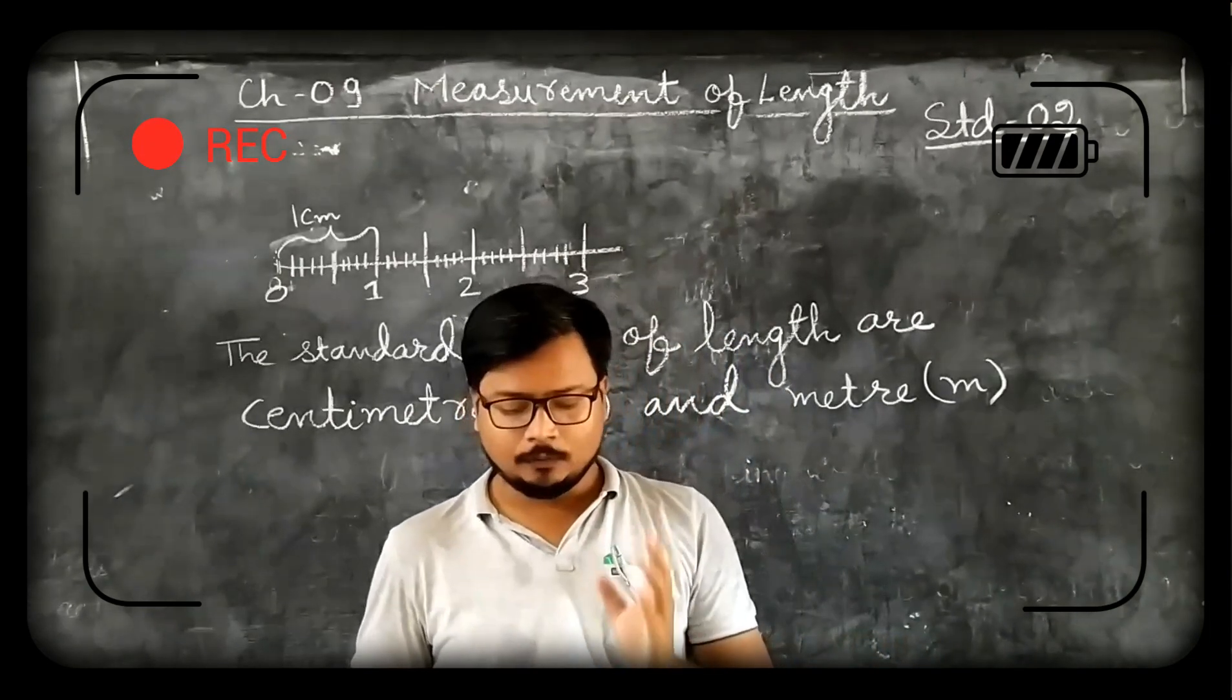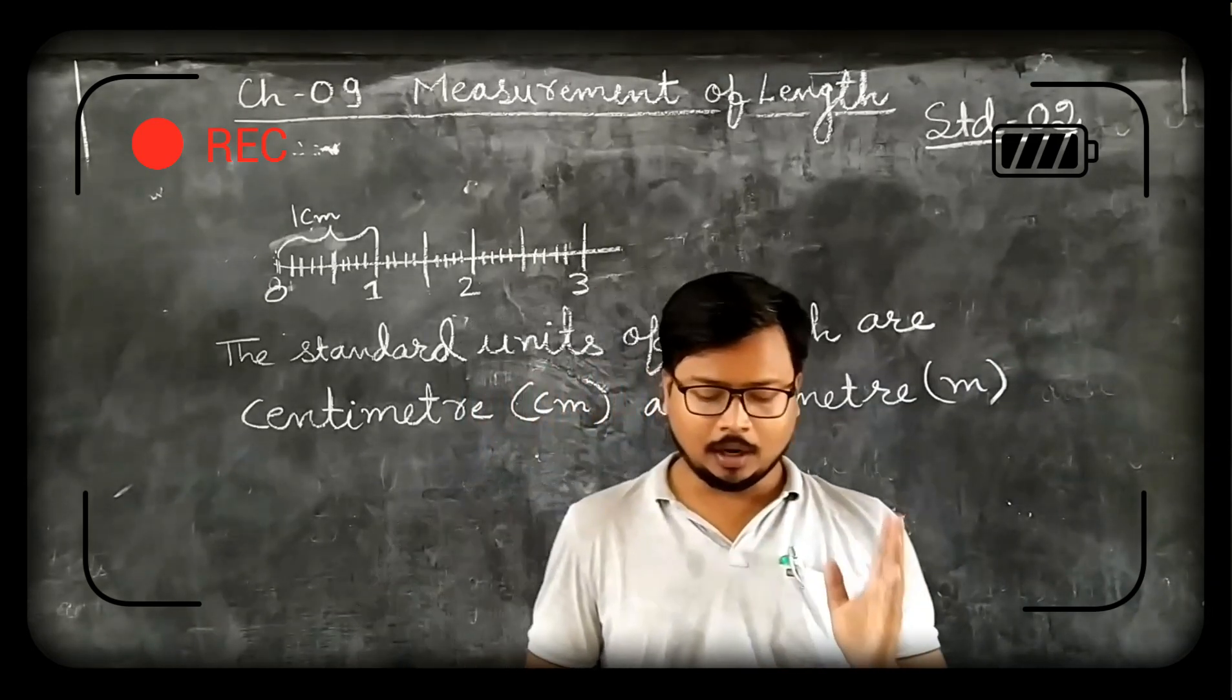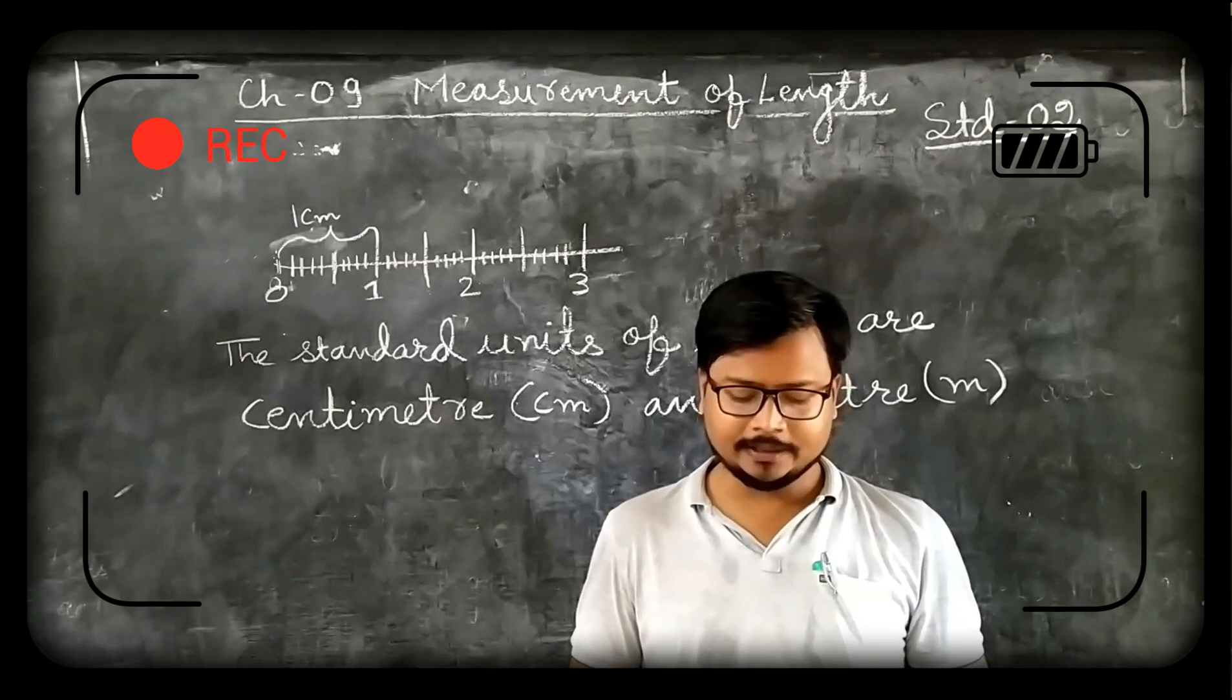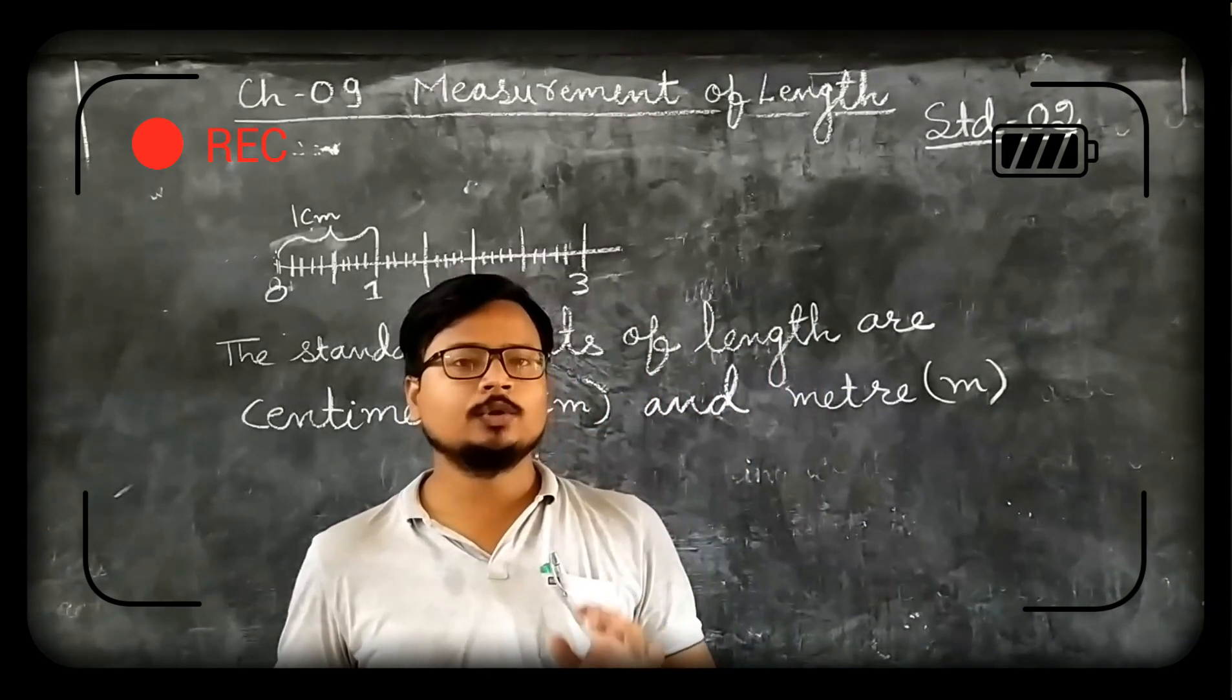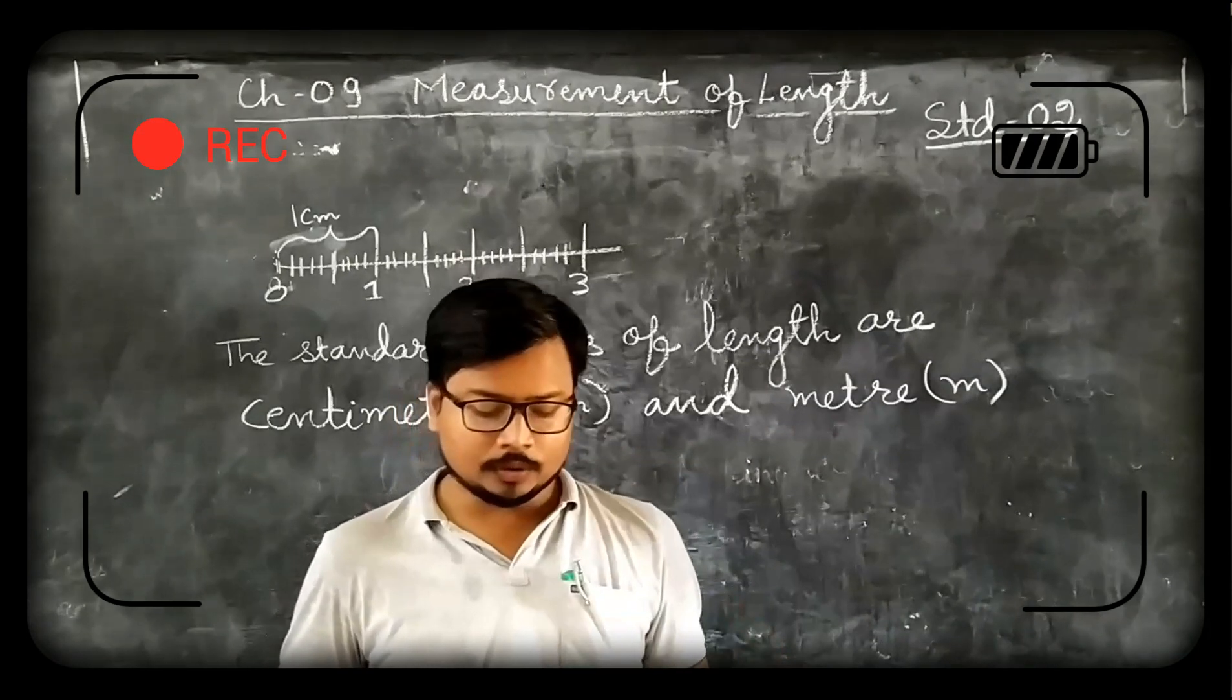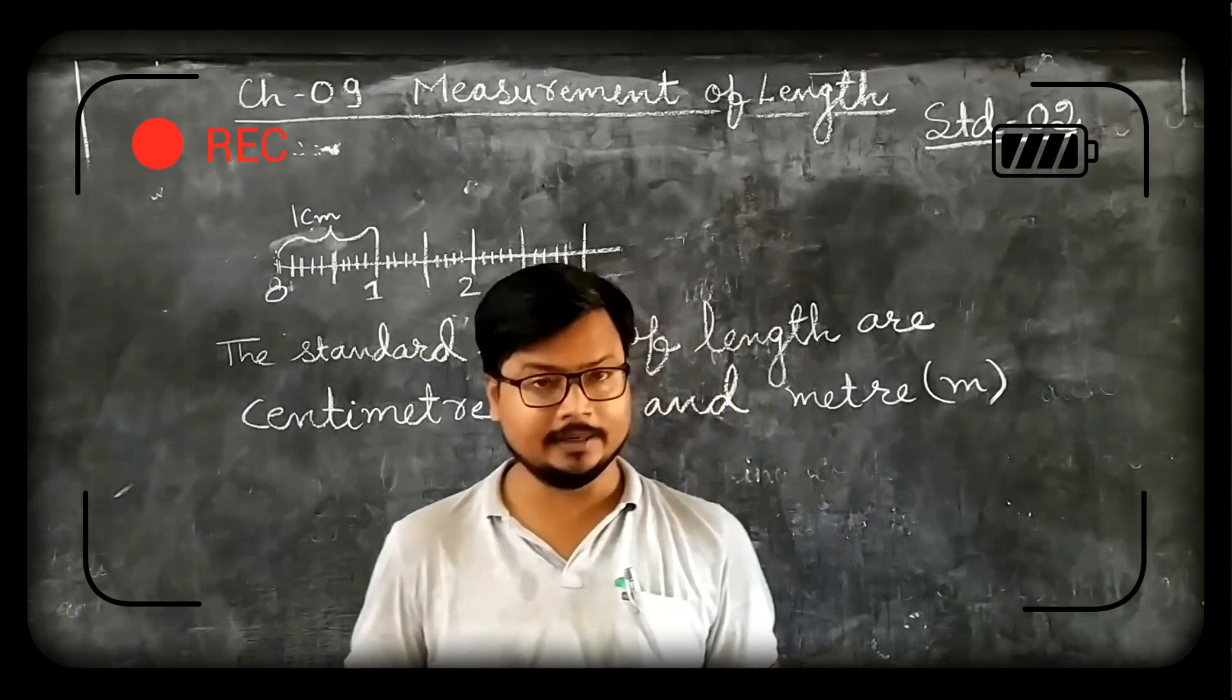Now Rahul's father measured Rahul's height with his own hand span. It is 8 hand span tall. As you can see, Rahul is a small boy, so his hand spans are also small. According to Rahul's hand span, his height is 14 hand span.